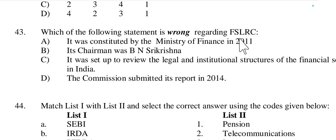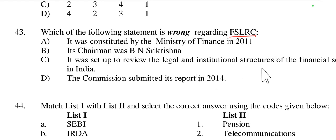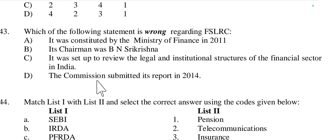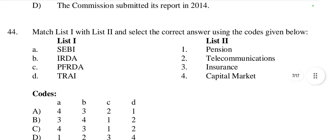Question 43: Which statement is wrong regarding FSLRC — the Financial Sector Legislative Reforms Commission? It was constituted by the Ministry of Finance in 2011 — correct. Its chairman was B.N. Srikrishna — correct. It was set up to review the legal and institutional structure of the financial sector in India — correct. But option D states the commission submitted its report in 2014 — this is incorrect. The commission submitted its report in 2013. So option D is wrong.